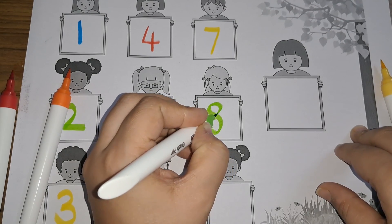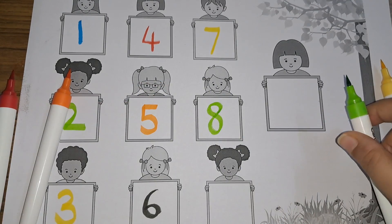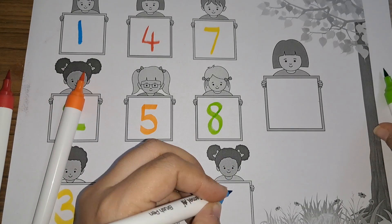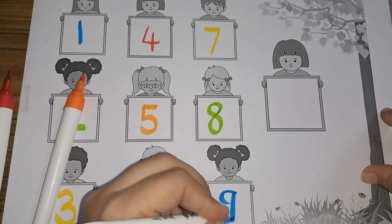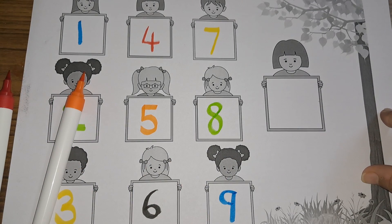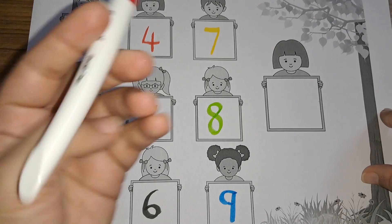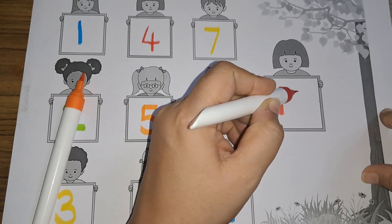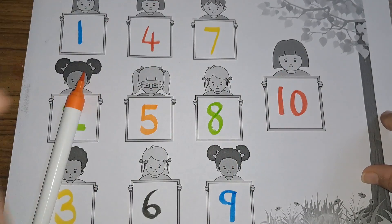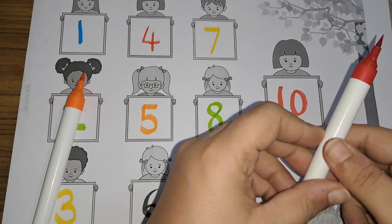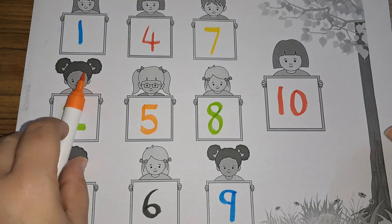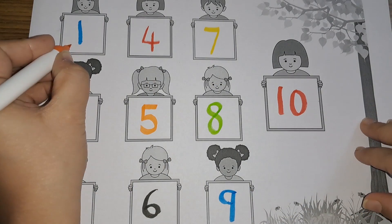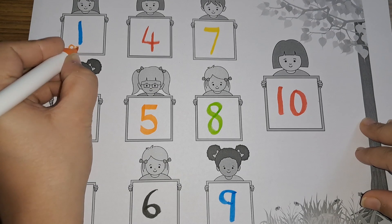Seven, S-E-V-E-N, seven. Eight, E-I-G-H-T, eight. Nine, N-I-N-E, nine. Ten, T-E-N, ten.